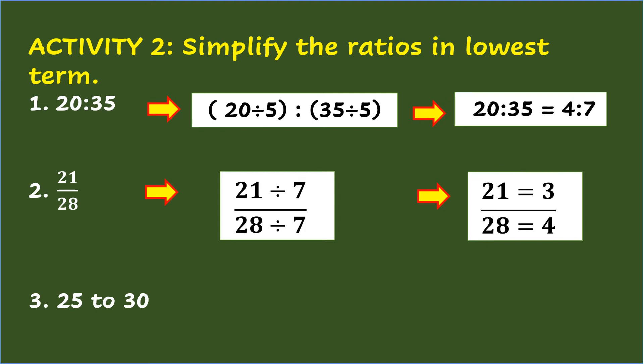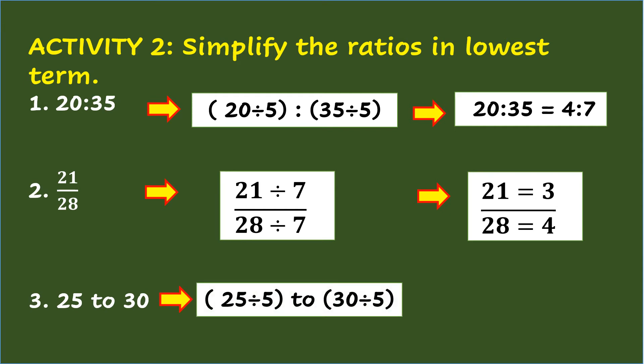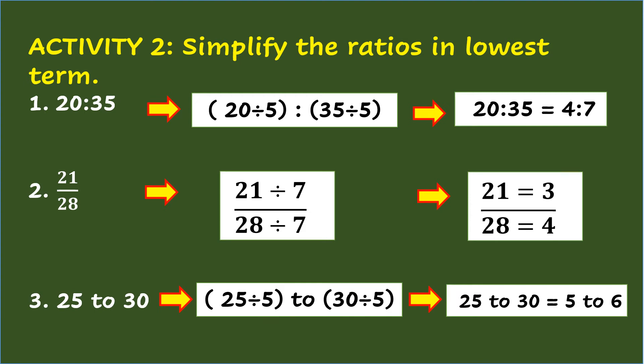Number 3: 25 to 30. The GCF of 25 and 30 is 5, so dividing 25 by 5 is 5, and 30 divided by 5 is 6. Therefore, the lowest term of the ratio 25 to 30 is 5 to 6.